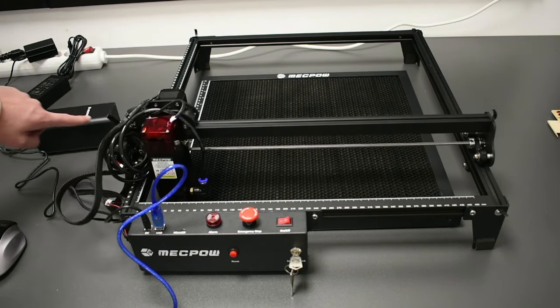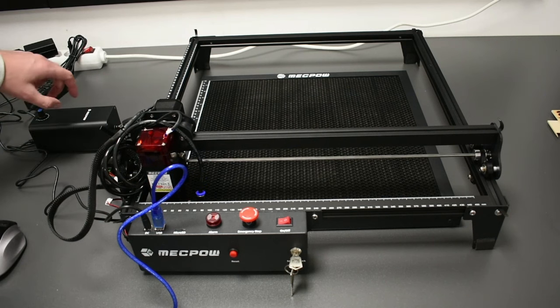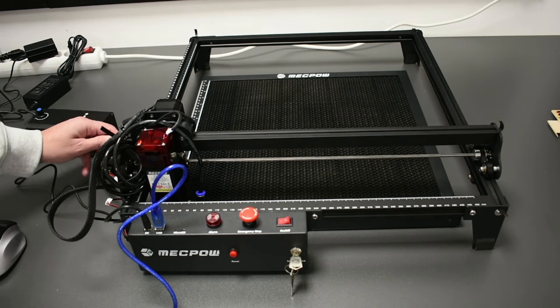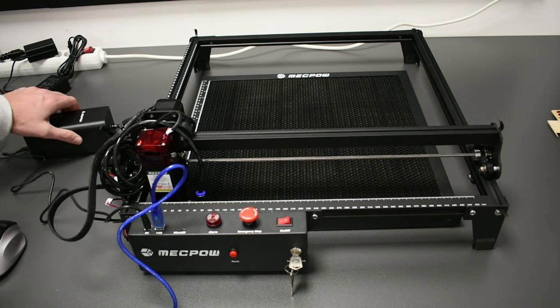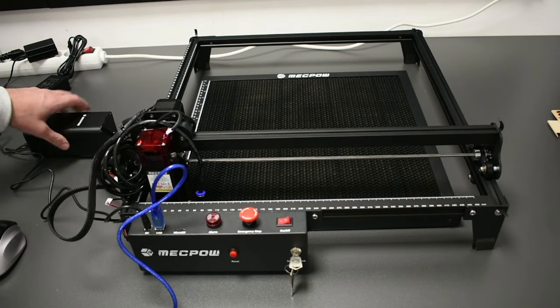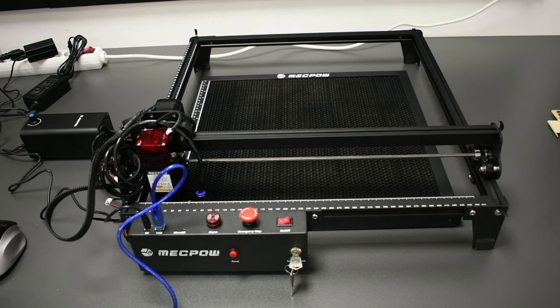As you can see, this is what I'm telling bad wire management. Basically the tube of the air assist is so rigid that it's moving back and forth on the table. This is really terrible.